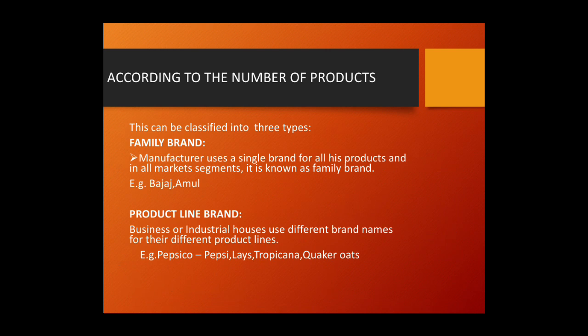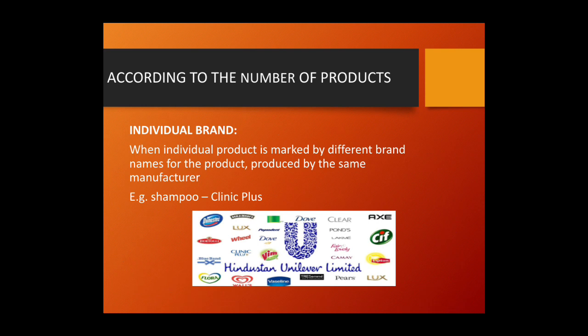When you talk about product line brand, businesses or industrial houses use different brand names for their different product lines. For example, PepsiCo has various product lines such as Pepsi, Lays, Tropicana, and Quaker Oats. The third variety under number of products is individual brands, where individual products are marketed under different brand names by the same manufacturer. The example is Hindustan Unilever Limited, which has separate brand names across product lines — in toiletries: Dove, Lux, Hammam, Rexona, Lifebuoy, and so on.